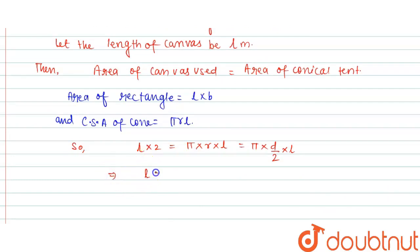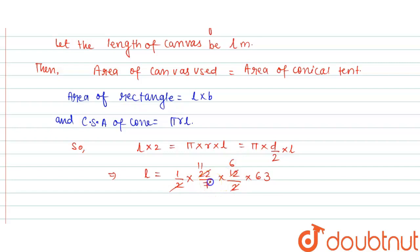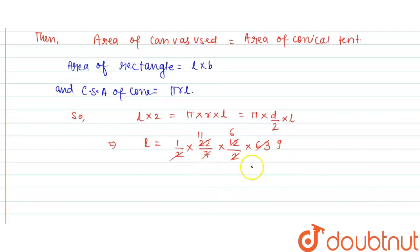Dividing both sides by 2, L = (1/2) × π. Putting π = 22/7, then × 12/2 × 63. We cancel: 22 gives 11, 12/2 gives 6, and 63 divided by 7 gives 9. So the length of canvas L = 11 × 6 × 9.